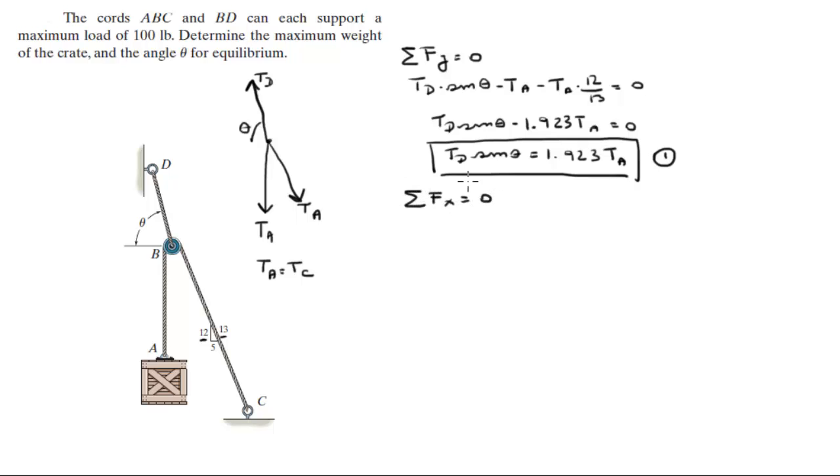Sum of the forces in the X are equal to zero in statics. So you know that the negative tension in D times the cosine of theta, plus the tension in A times 5 over 13 is equal to zero. So you know that 0.385 tension in A, which is 5 over 13, is equal to the tension in D, cosine of theta.